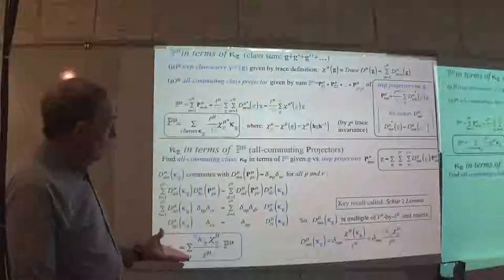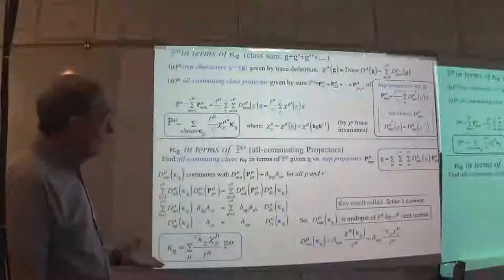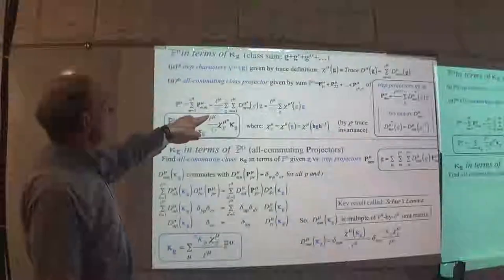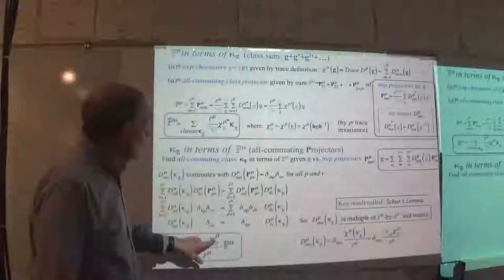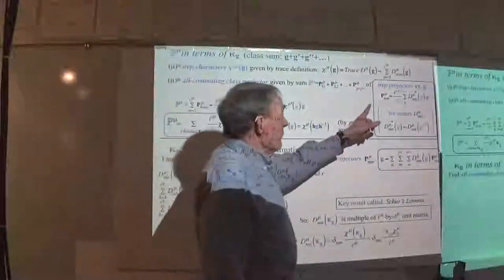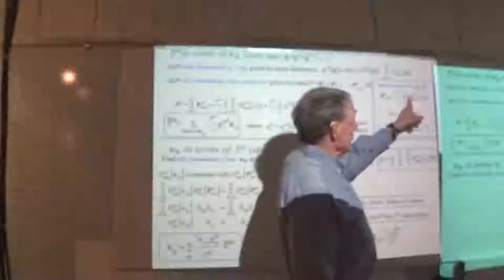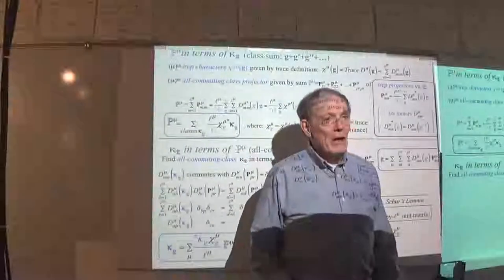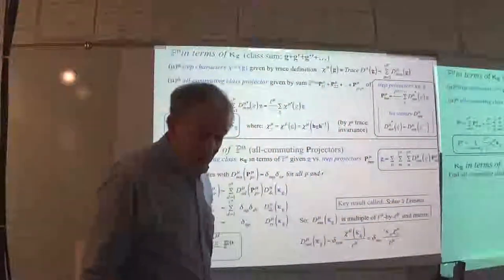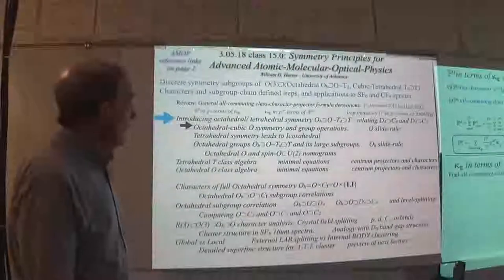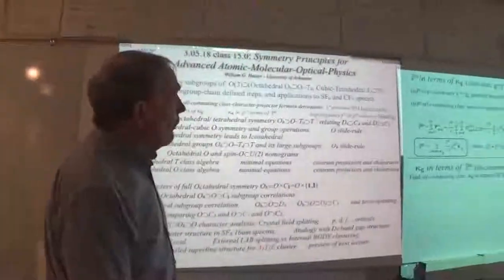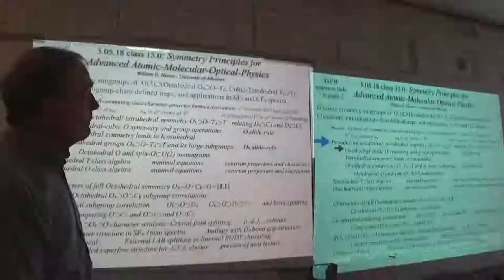We've gotten a long way without using this, and we'll get through today without it, but you should be aware it's there. The order of the class over the dimension, where dimension over order of group gives this, and then you have a character — a character star if using complex representations. Don't forget to put the star in when doing a projector. The wave function is always a complex conjugate of the representation of the operators. You can go back and look at this on your own time, and use it for more complicated character analysis.